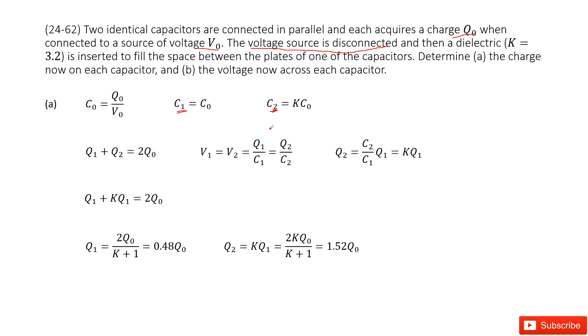As for the charge now on each capacitor, for this case, we can see the charge is constant. Then initially, the charge on capacitor 1 plus capacitor 2 equals the final charge on capacitor 1 plus capacitor 2.